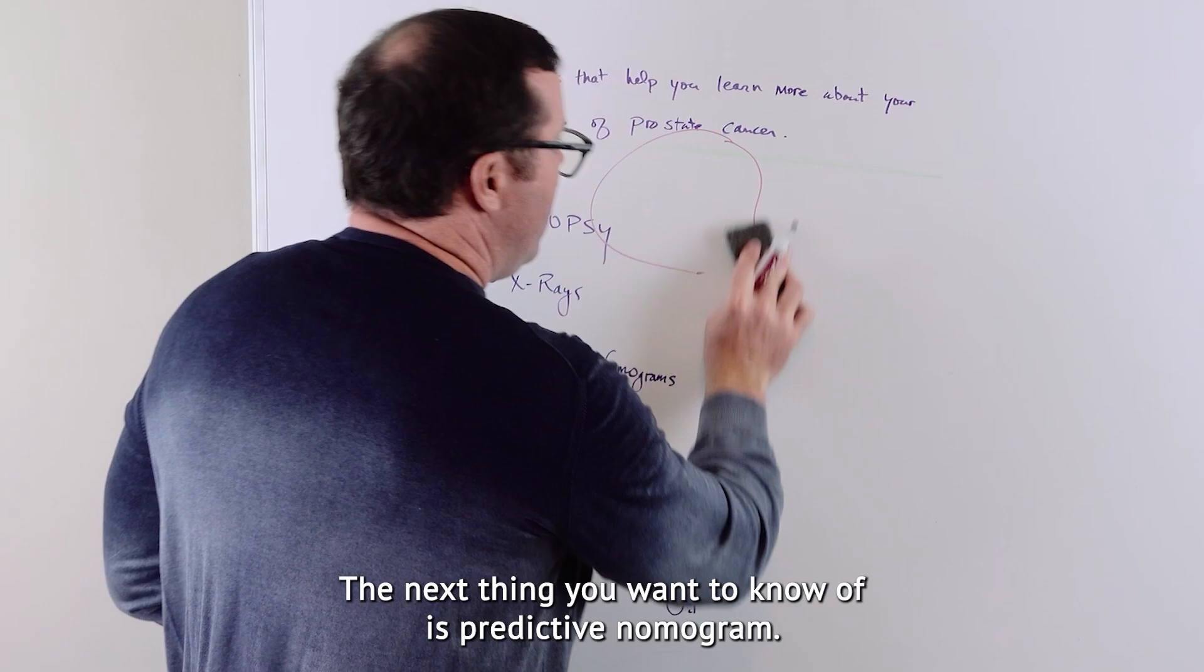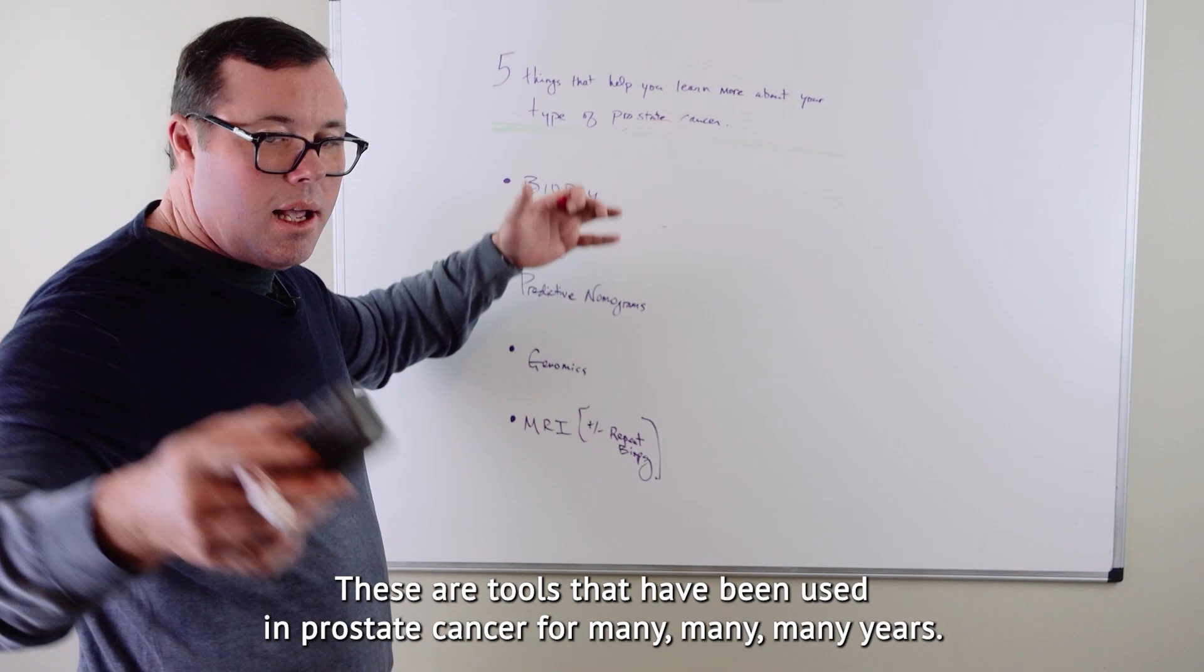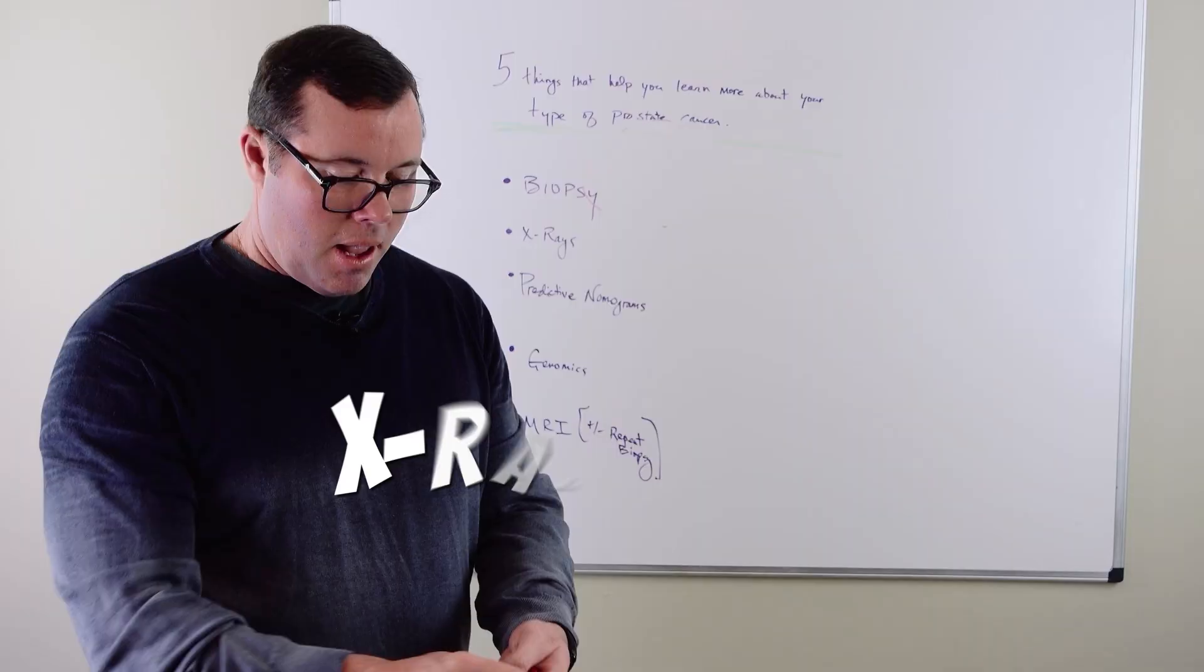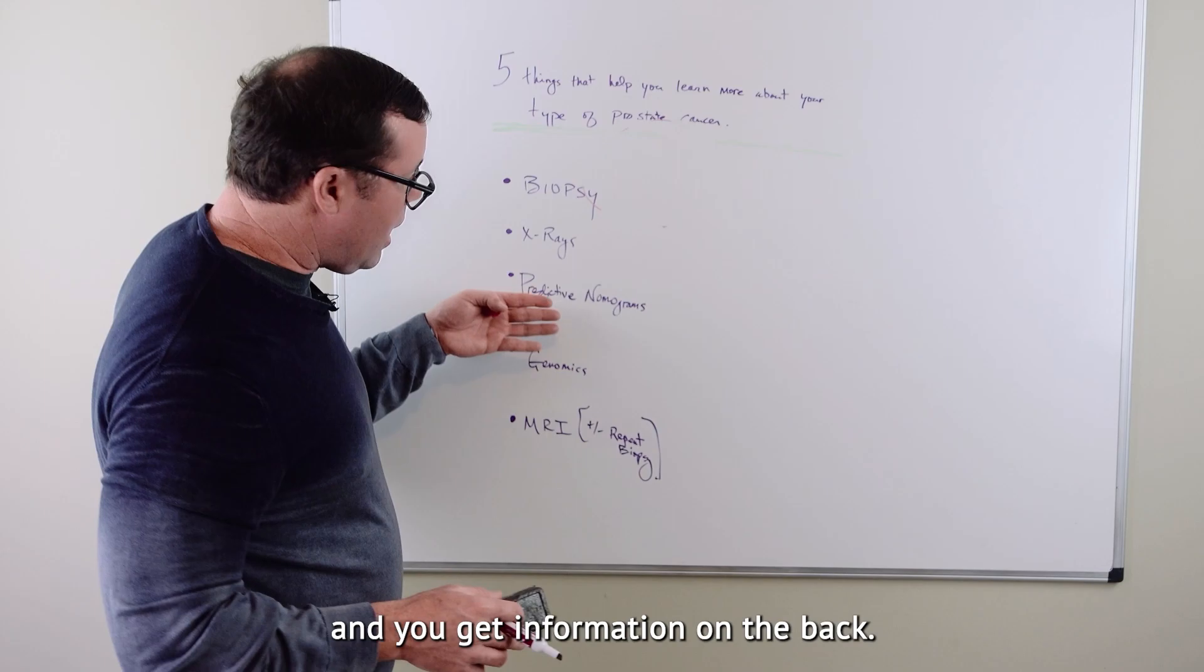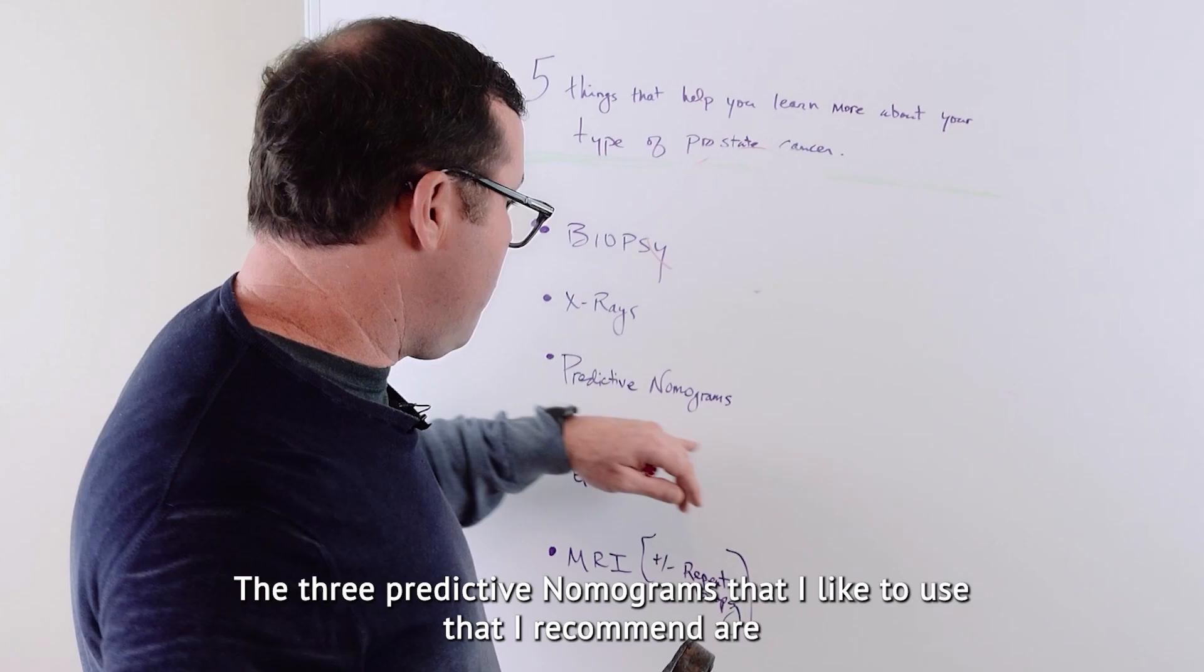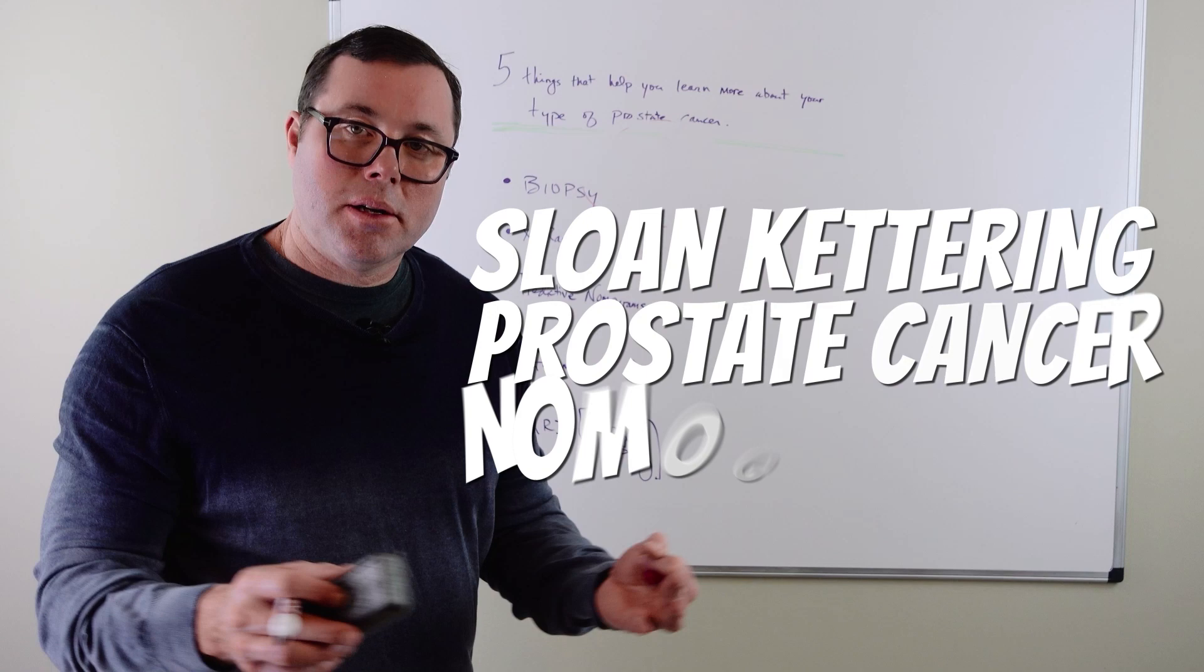The next thing you want to know of is predictive nomograms. These are tools that have been used in prostate cancer for many years. And you essentially just plug in your data, your PSA, your clinical grade, your biopsy result, and your x-ray result. And you get information on the back. The three predictive nomograms that I like to use that I recommend are Parton Tables, UCSF Capra Score, and Sloan Kettering Prostate Cancer Nomogram.